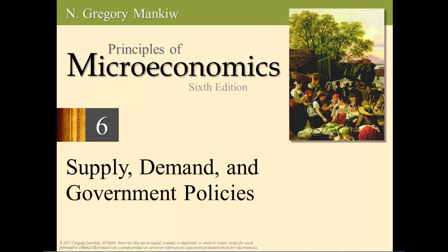When we talk about the reasons why the government would intervene in market operations — and remember, the market is the transaction between the buyer and the seller for goods and services — there are four reasons. One, because they assume that market prices are unfair. Two, because resources need to be protected. Three, to raise revenue for public goods. And four, to influence the market toward a specific outcome.